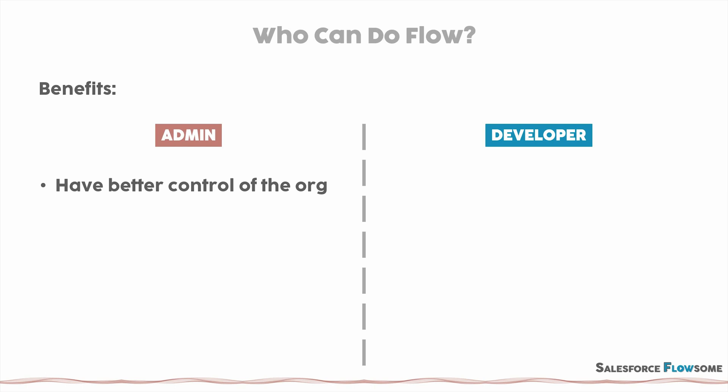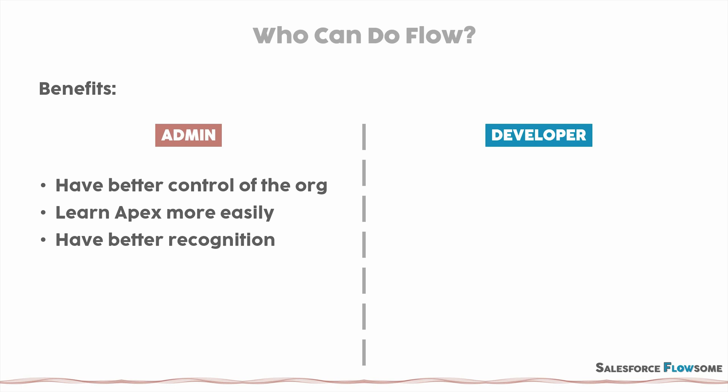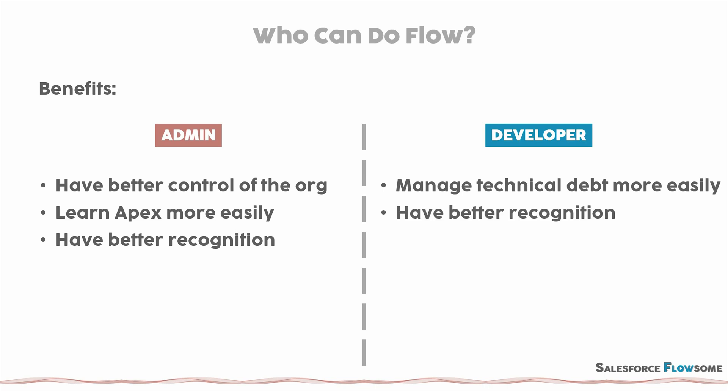Flow is the perfect platform for you to achieve this. For admin, if you learn flow, you will have better control of the org and it's easier to know what happens in the backend. Also, later on, if you want to learn Apex, it will be a lot easier. If you're a business role with some technical knowledge, it's going to help you have better recognition in your job setting. For developers, flow will help you manage technical debt more easily. Because the way you can build flow is more limited than Apex, you can find the structure a lot quicker, helping you maintain automation with less effort. It will also help you get better recognition, since you can now communicate more easily with business stakeholders, letting more people know your capability and problem-solving skills.